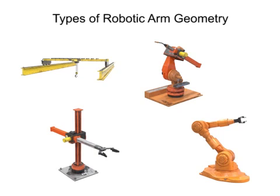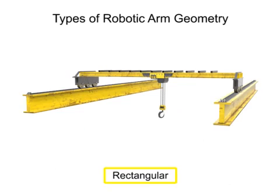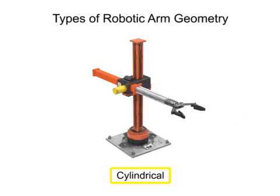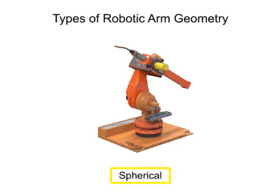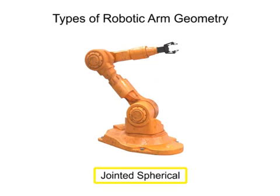There are four main types of robotic arm geometry: rectangular, cylindrical, spherical, and jointed spherical.